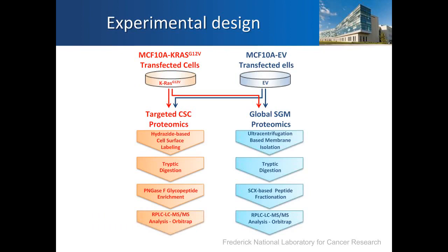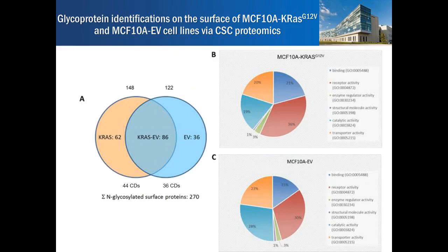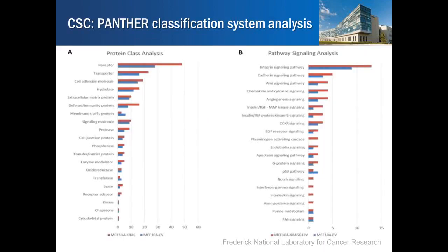This is our experimental design. We used targeted cell surface proteomics via glycoproteomics and our global proteomics using strong cation exchange fractionation, then collated the data to see the differences between the cell surface of cells expressing the K-RAS mutant versus empty vector transfected cells. In the glycoproteomics analysis, we found that 62 proteins are unique to the K-RAS surface, 86 proteins are common, and 36 are found only on the normal empty vector transfected cells. That was encouraging, but just the beginning of our bioinformatic processing.